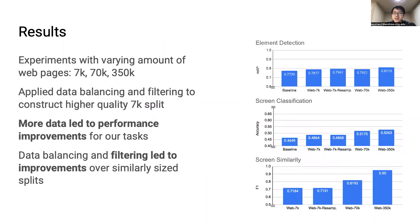We applied these strategies in a series of experiments and wanted to see if the amount of data used with each strategy affected the model's final performance. We created randomly sampled splits of data with 7,000, 70,000, and 350,000 web pages. We also created a smaller but higher-quality data split through data balancing and filtering, resulting in 7,000 web pages. Across our experiments, we found that using more data led to more effective transfer learning and better performing final models. We also found that data balancing and filtering could lead to improvements over other similarly sized splits of data.